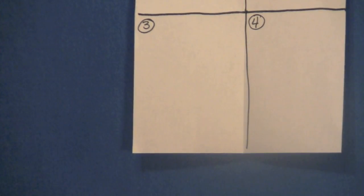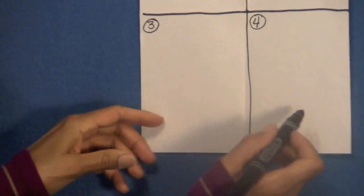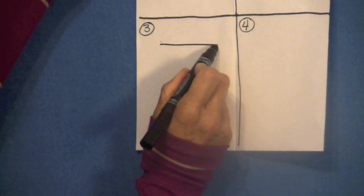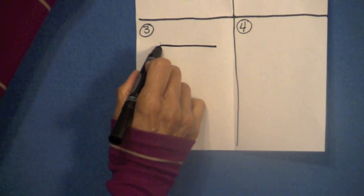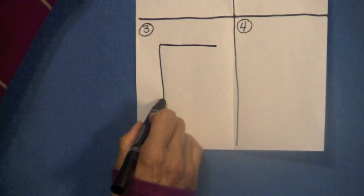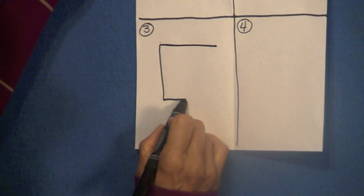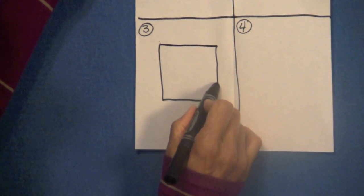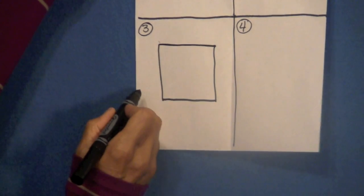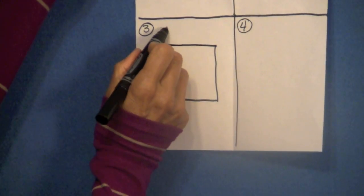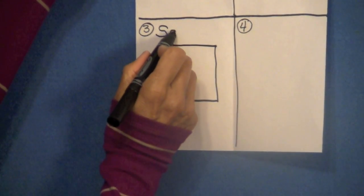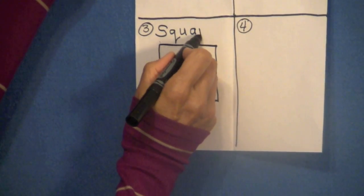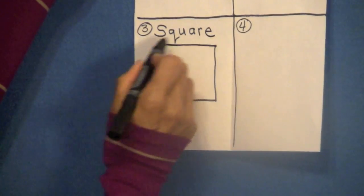Boys and girls now in box number three I want you to draw a square. A square has four equal sides so try to do your best to get four equal sides here. And how do we spell square boys and girls? Capital S-Q-U-A-R-E. Square.